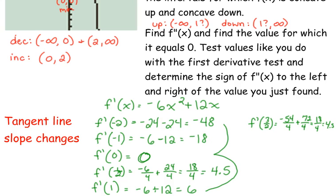It's less positive. It's still positive, but it's less positive. F prime of 2. 2 was our critical number, so its derivative is 0. F prime of 3, 3 squared is 9, that's negative 54 plus 36, which is negative 18.